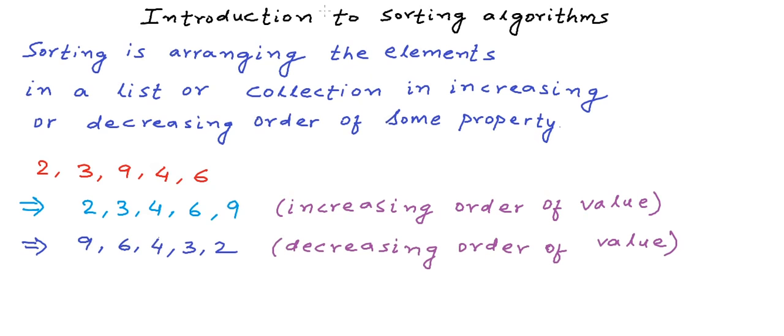And as we have said in the definition, we can sort on any property. What if we want to sort this list on the basis of, let's say, increasing number of factors. So the number with lesser number of factors is towards the beginning of the list.